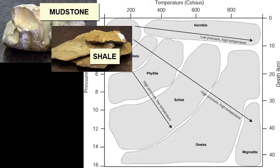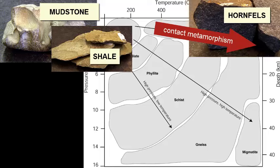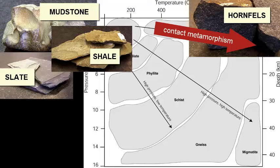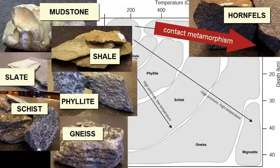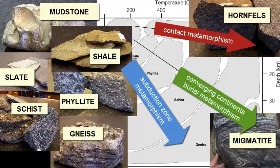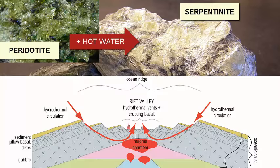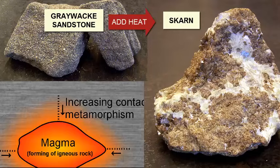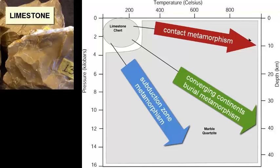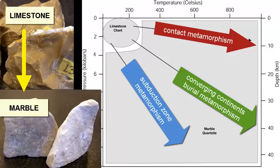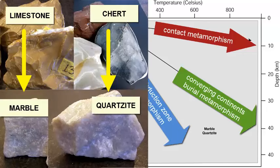And a mudstone? It turns to hornfels in a high-temperature, low-pressure environment, and to slate, phyllite, schist, gneiss, or migmatite in increasing grade in a high-pressure environment. Serpentinite forms through hydrothermal metamorphism of peridotite at mid-ocean ridges. Contact metamorphism of a mixture of minerals, like a graywacke sandstone, leads to a skarn. And limestone turns to marble, while chert turns to quartzite in any and all metamorphic settings.